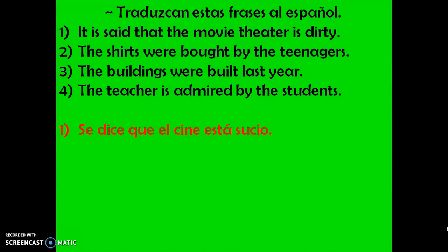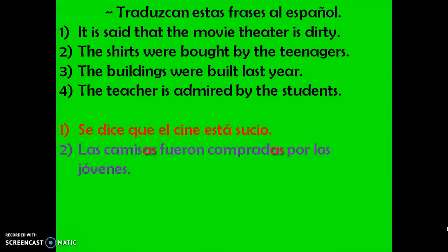Number two: The shirts were bought by the teenagers. Do we know by whom? We do. So, formula number two. Then we have to figure out which verb tense — since the shirts were bought, that's going to be preterite. Pause the video if you need to and try it. The correct answer — say it with me: Las camisas fueron compradas por los jóvenes. Compradas has to be feminine plural because it's agreeing with camisas.